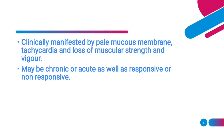Clinically, anemia is manifested by pale mucous membrane, tachycardia that is abnormally high heart rate, and loss in muscular strength and vigor. Anemia may be chronic or acute, as well as responsive or non-responsive in regards to whether the bone marrow responds appropriately to the decrease in RBC in blood by releasing reticulocytes or not.